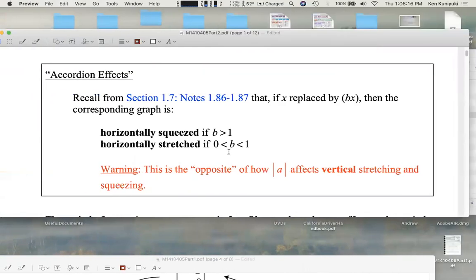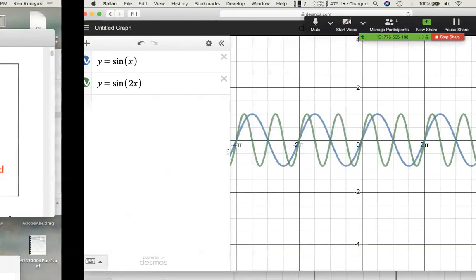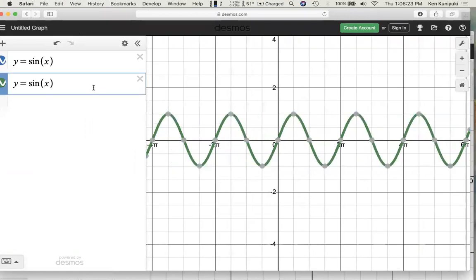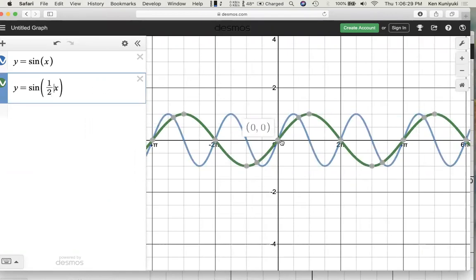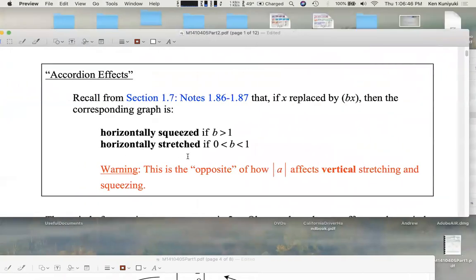If b is between 0 and 1, like 1 half, we get a horizontal stretch. I'll show you. So instead of y equals sine of x, we have y equals sine of 1 half x. We're going from blue to green. The thick green graph, that's stretched out. So we have only half of a cycle between 0 and 2 pi. The full period is 4 pi, from here out to here. The period is doubled. And that's a horizontal stretch.